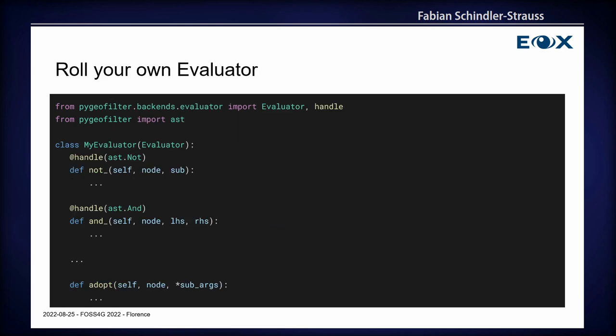If you have a backend that is not represented on this list, it's rather easy to roll your own evaluator. This is done also using Python — you simply inherit from a specific base class, and then with decorators you declare which abstract syntax tree node you want to handle in this function. You simply write a small function that translates this AST node into whatever is required for your backend. There's also a catch-all, which is the 'adopt' function, which is called if none of the others handled this particular node.